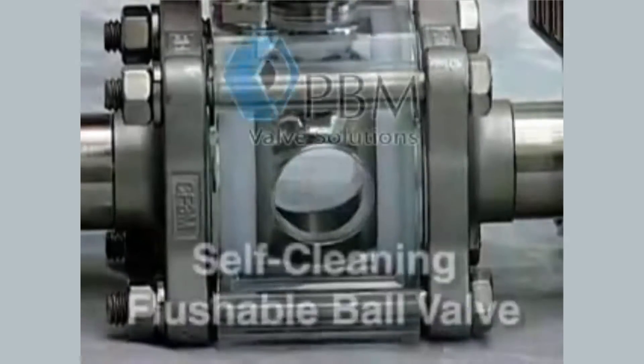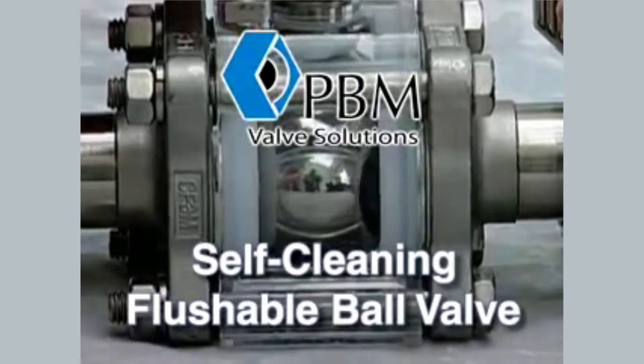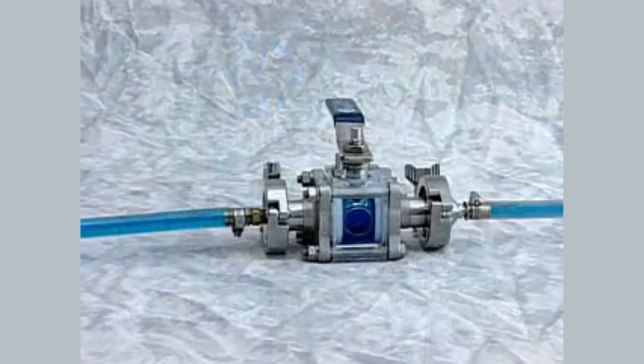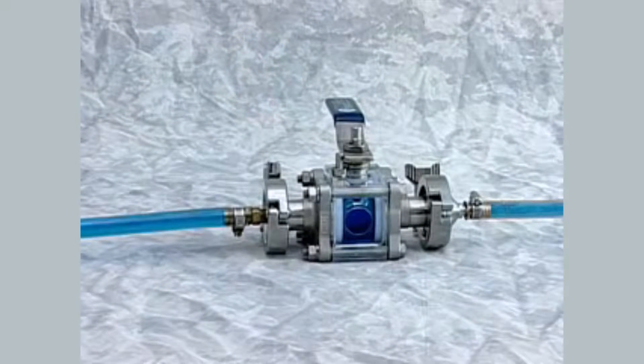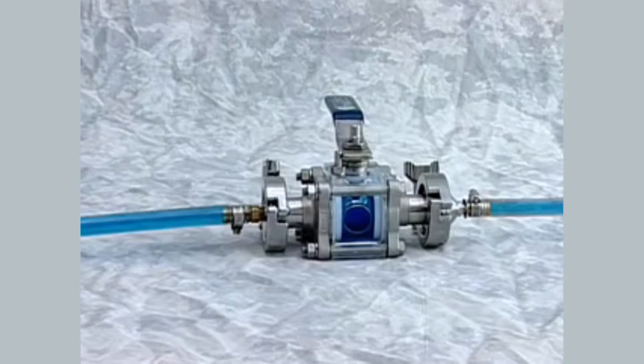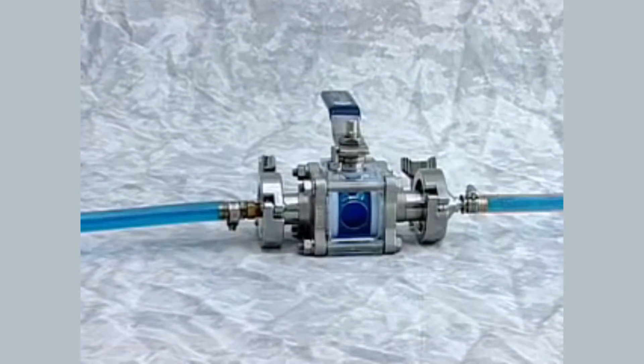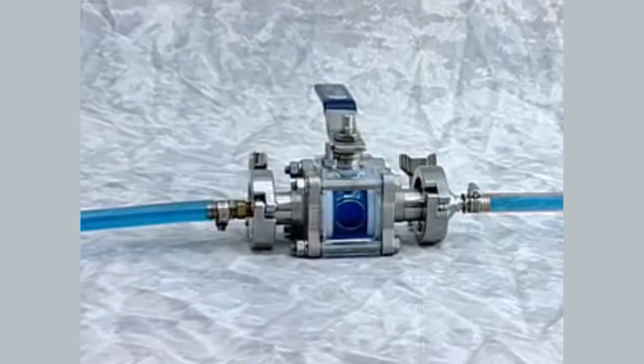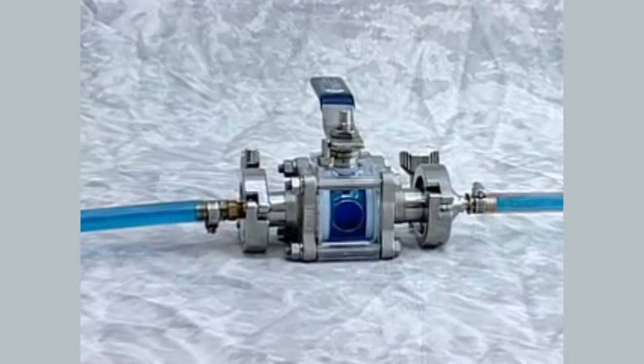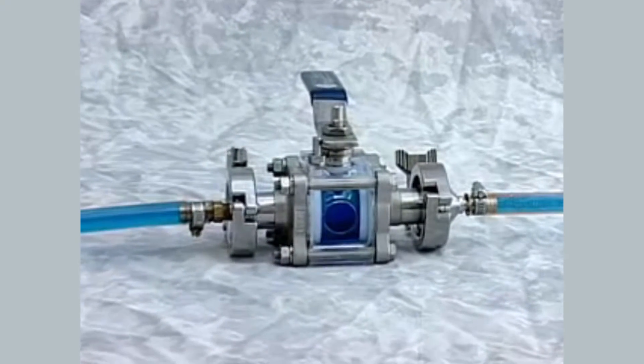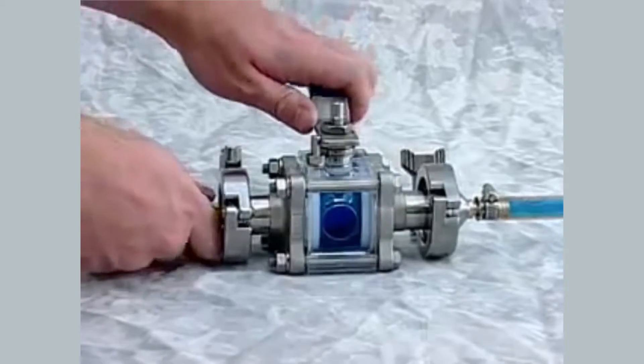Solution: PBM's Self-Cleaning Flushable Ball Valve. The PBM valve body and process line is also completely filled with liquid laundry detergent. This demonstration shows how the PBM Self-Cleaning Flushable Ball Valve thoroughly cleans all valve internals during a process line flush.